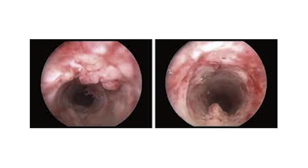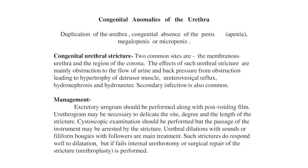Starting with the congenital anomalies of the urethra — there are a few anomalies which are too rare to require mention, such as duplication of the urethra, congenital absence of the penis (apenia), megalopenis, or micropenis. A few congenital anomalies, though rare, are sometimes seen in surgical practice.